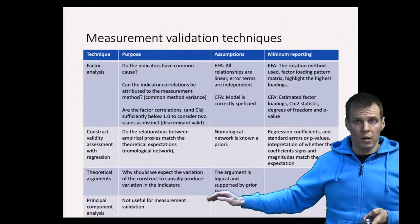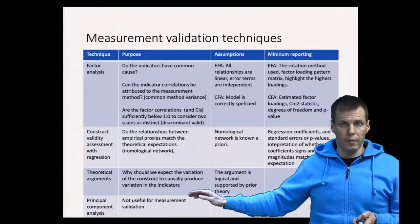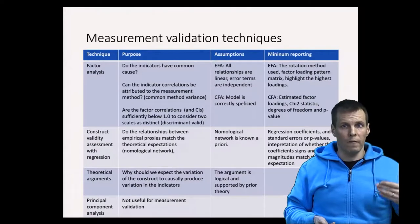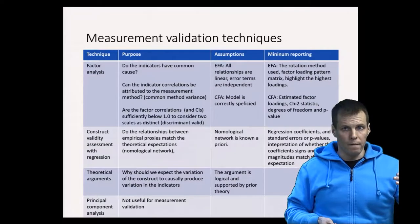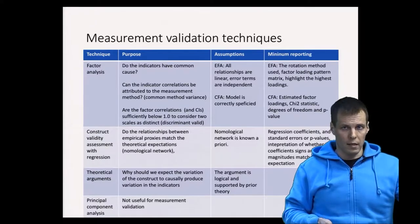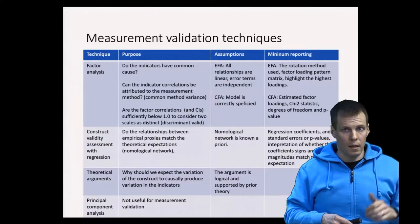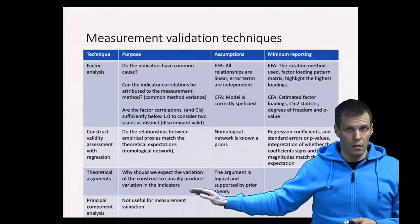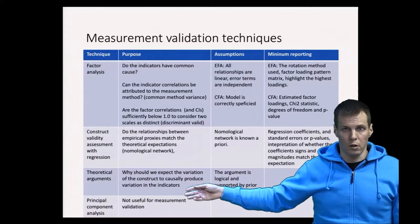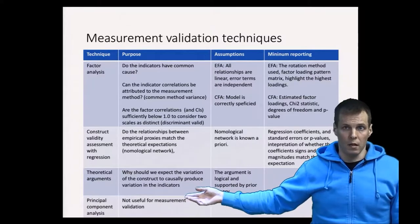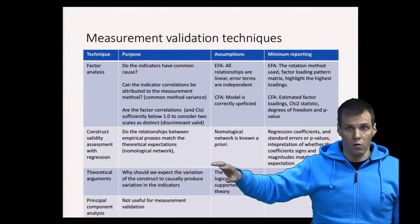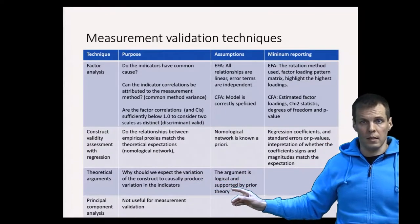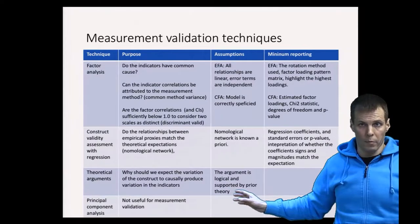Theoretical arguments are rarely seen but are very important. The idea of validity is that variance of a construct causes variance in the items. The conceptual theoretical argument must answer why we should expect construct variation to cause variation in the data — that is, what is the process through which the construct causes people to respond to a survey in a particular way. The assumption is that the argument is logical and supported by prior theory.